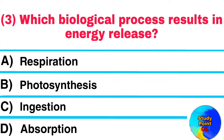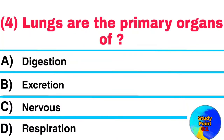Question No. 3. Which biological process results in energy release? Answer: Respiration. Question No. 4. Lungs are the primary organs of — Answer: Respiration.